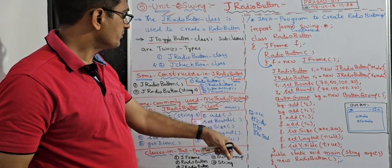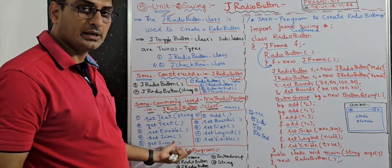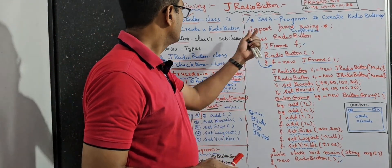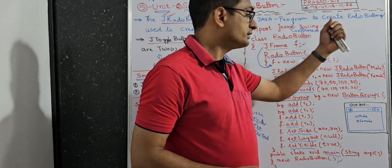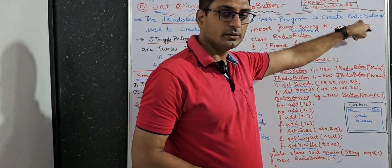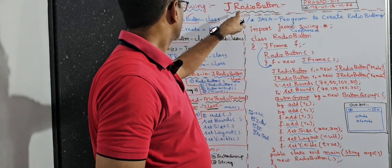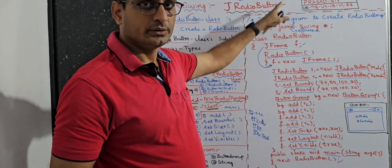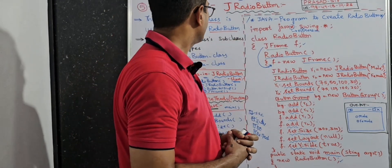The program title is: Java program to create a radio button, or write a program for JRadioButton. You can get any question in the exam. Here the import statement is: import javax.swing.* — import is a keyword, javax is a library, X means extension, swing is a package, and star means all classes, constructors, and interfaces from this swing package will be imported and can be used in this program.